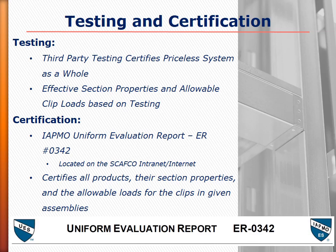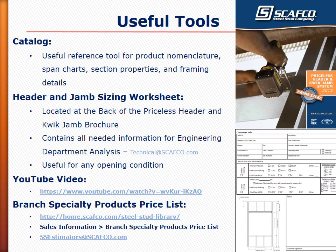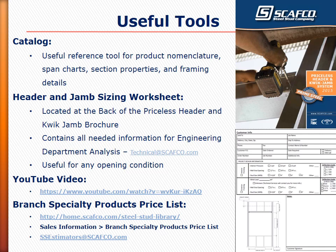This certification validates the use of the Priceless Header and Quick Jam system on any and all projects. The first useful tool is the Priceless Header and Quick Jam brochure mentioned at the beginning of this presentation — highlights include product nomenclature, span charts, section properties, and framing details. The second tool is the header and jam sizing worksheet, found at the back of the catalog and on the Scafco intranet in the steel stud library under header and quick jams. This tool aids in obtaining the information needed for the Scafco engineering department to accurately size members. Simply have the customer fill out the sizing worksheet and forward it to technical at scafco.com.